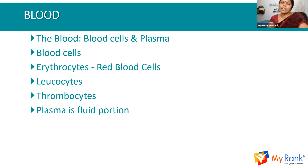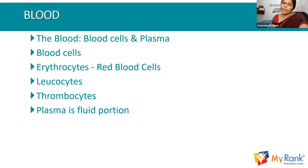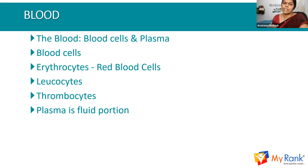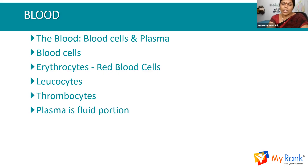Plasma is mainly the fluid portion, consisting mainly of plasma proteins. Without fibrinogen, we call it serum. The plasma proteins are alpha, beta, and gamma proteins, which are mainly present in plasma. Without fibrinogen it is called serum. That is about blood and blood cells.